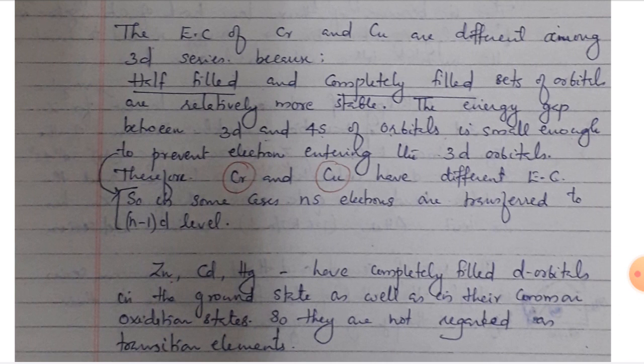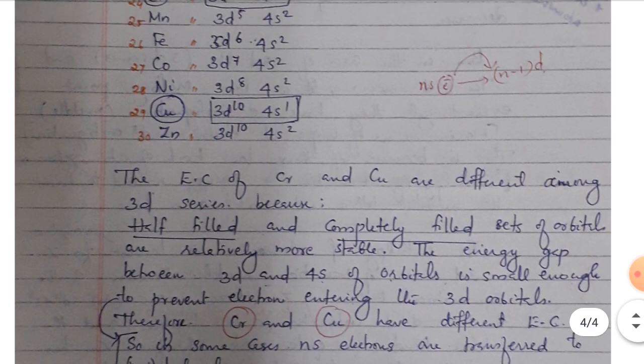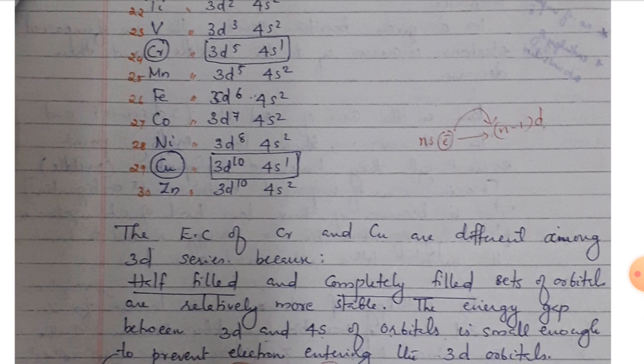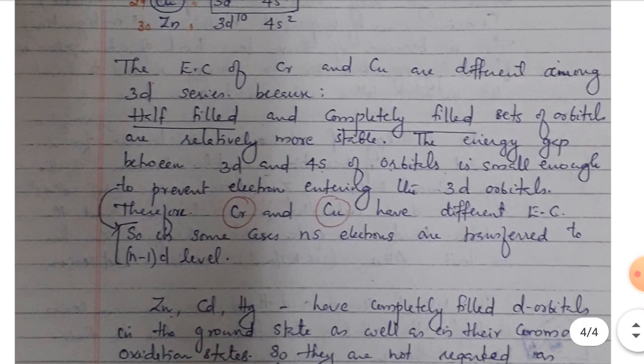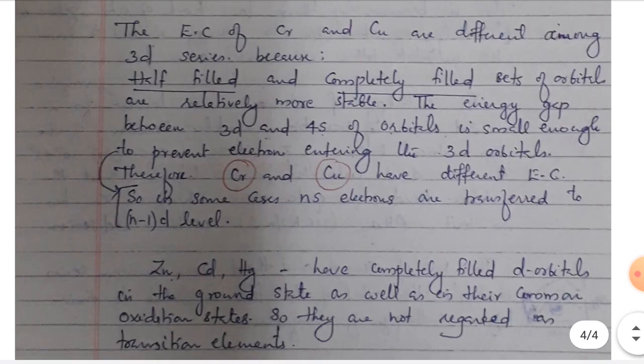Zinc, Cadmium, and Mercury are D-block elements but are not regarded as transition elements because they have completely filled D-orbitals in their ground state and in their common oxidation states. Since their D-orbitals are not partially filled, they do not meet the definition of transition elements. The exceptional configurations in the 3D series are Chromium and Copper, due to extra stability of half-filled and completely filled orbital sets.